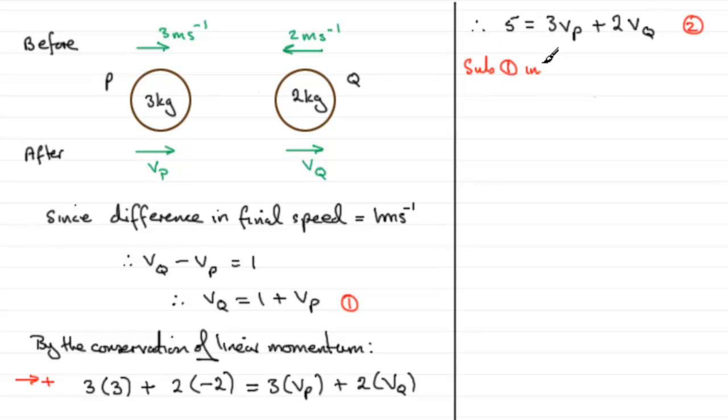What we'll do is substitute equation 1 into equation 2. So what's that going to give us? We'll therefore have 5 equals 3VP plus 2 lots of VQ, which is now 1 plus VP.